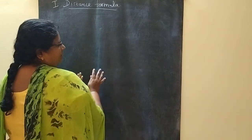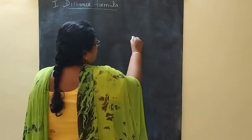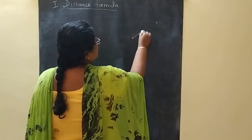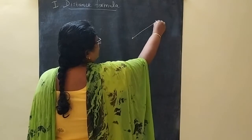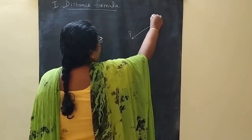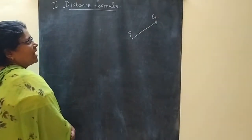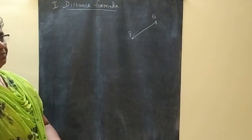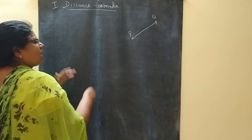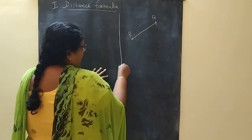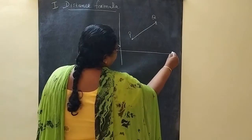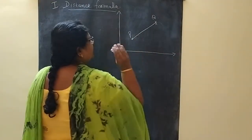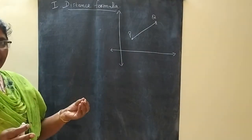So this is the plane. In this plane, if two points are marked, how do we find the distance between these two points P and Q? We are going to derive that — that is known as the distance formula. For deriving the formula, we consider the two points lying in the first quadrant. We can take them anywhere.